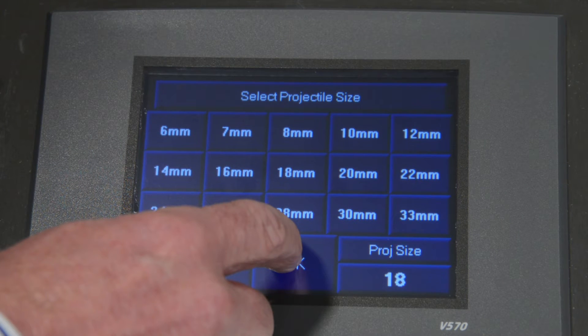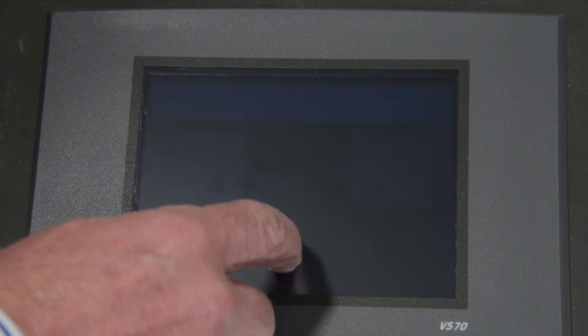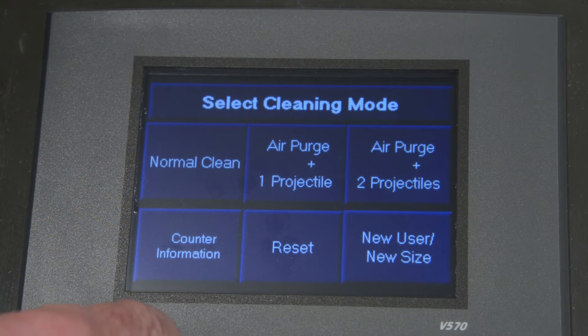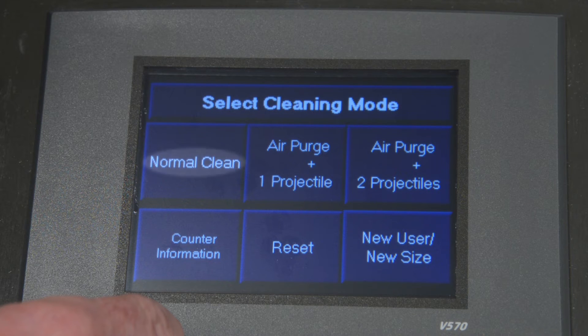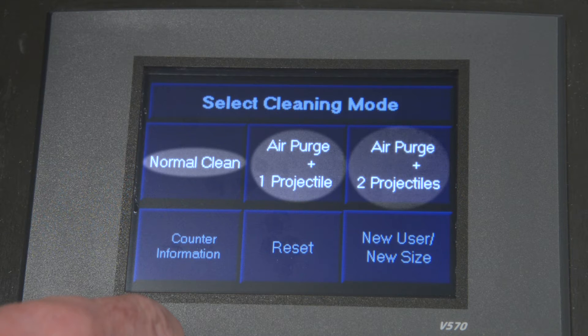Additional sizes can be found by pressing More Selections. The Select Cleaning Mode screen will display the following options: Normal Cleaning, Air Purge plus one projectile and Air Purge plus two projectiles.